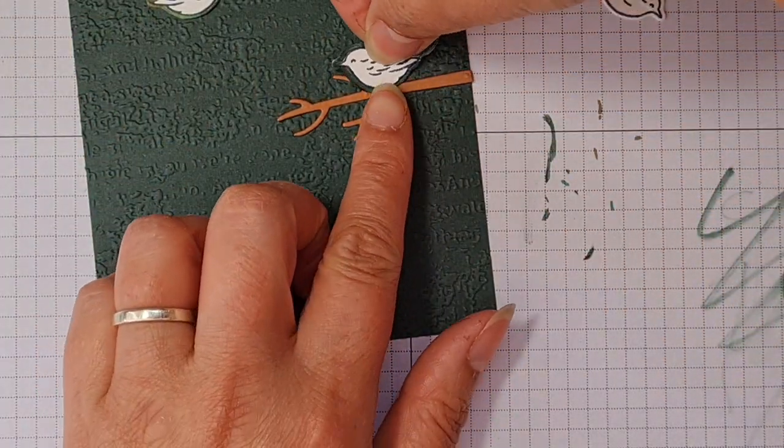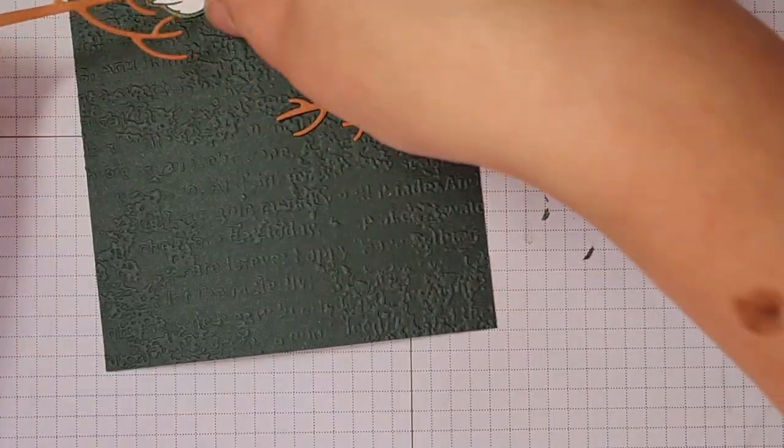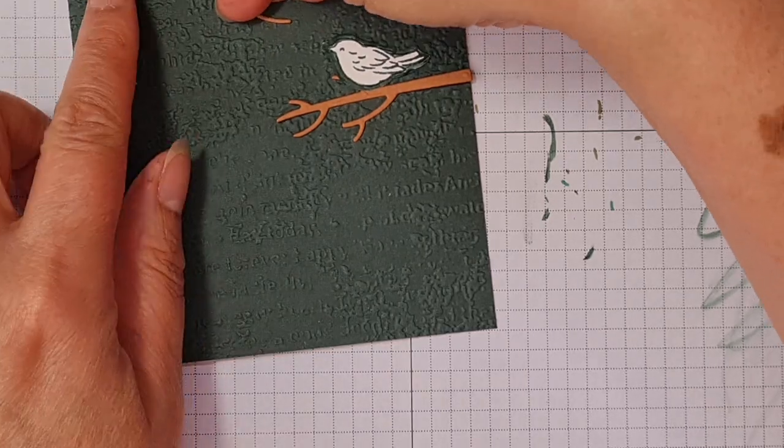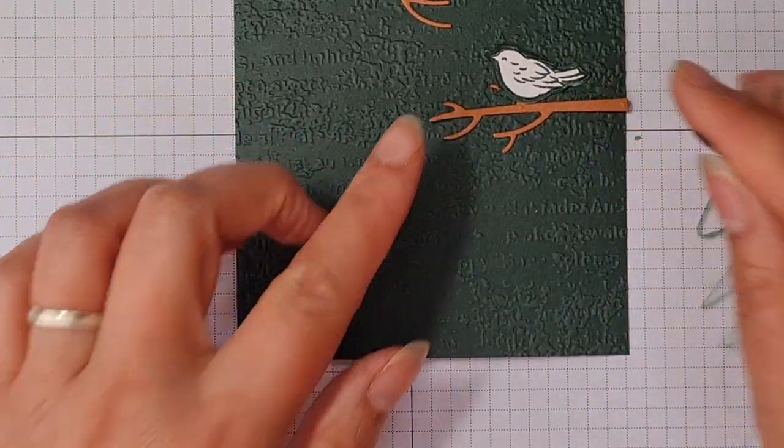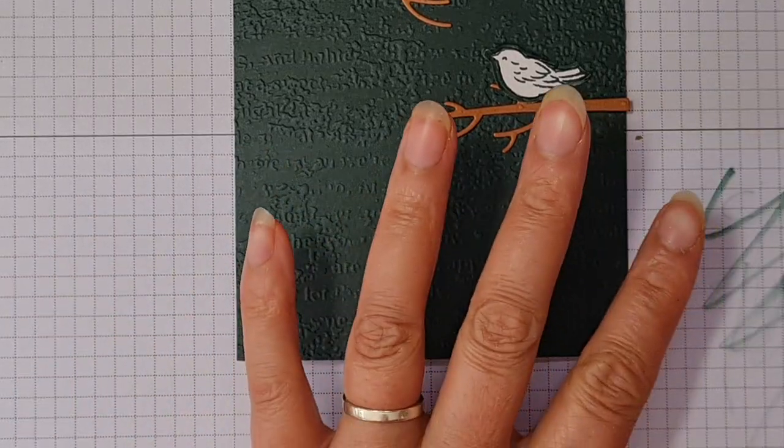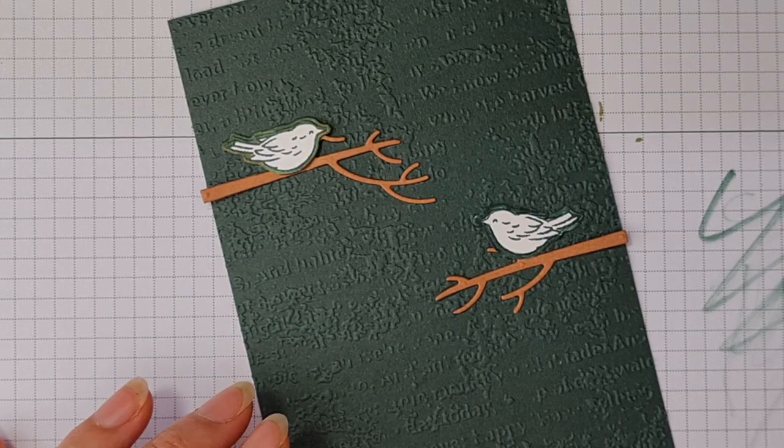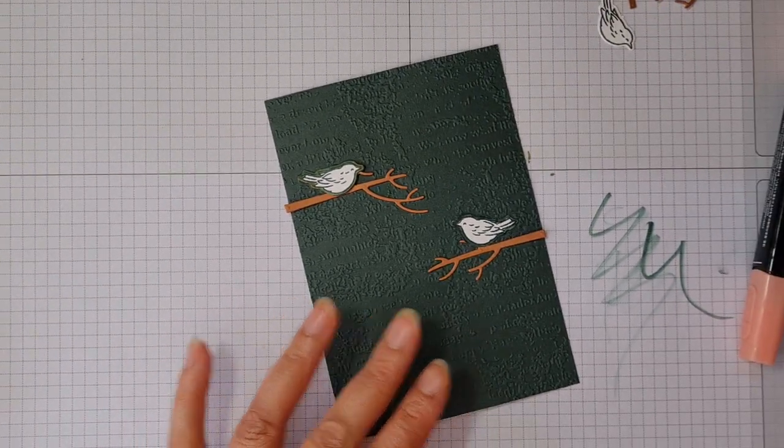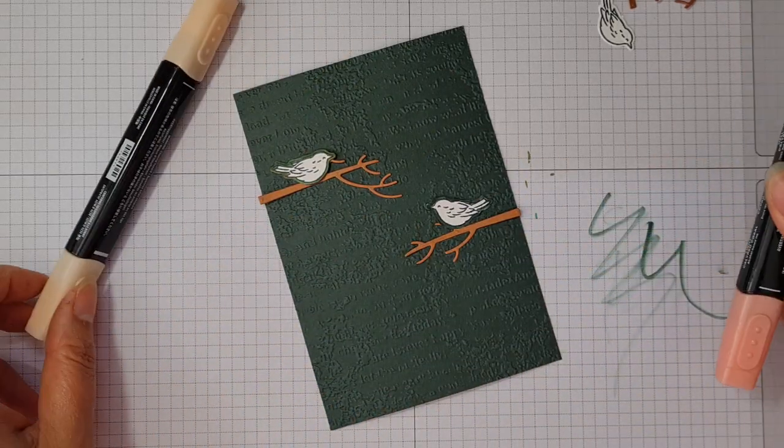So here we have a couple of wee branches. Now, I deliberately wanted to keep this card very simple just to show you that you can create very effective and beautiful cards without doing too much to it. And I was thinking of having red birds, but I think what I'm going to do is just have them slightly paler, as if they've been caught in a frost or something.